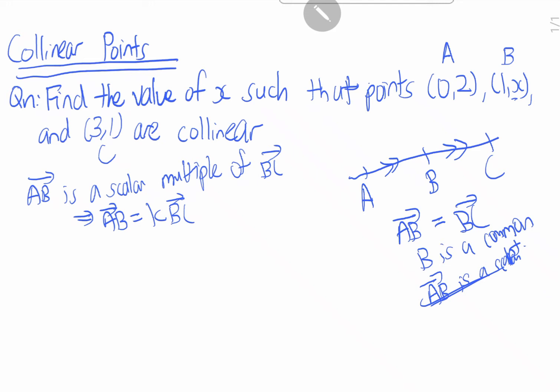So let's start off first. Let's find AB. AB is equals to - our column of A is (0,2), let's do it in column way so it's easier to visualize. So B is (1,x), C is (3,1).